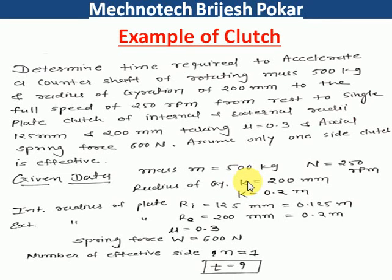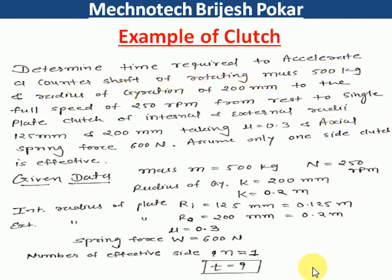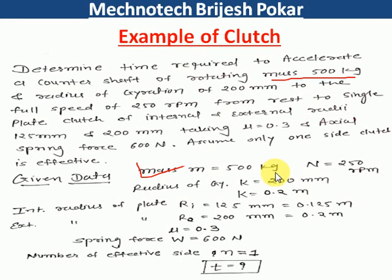Hello friends, welcome to MCNO Tech YouTube channel. Today's topic is an example of a clutch. Let's start — we need to determine the time required to accelerate a counter shaft. The rotating mass is 500 kg, so mass m = 500 kg.